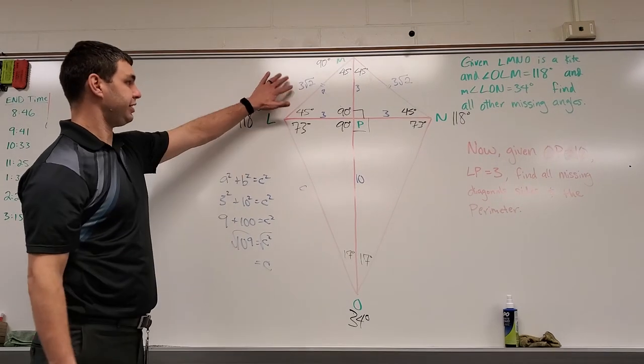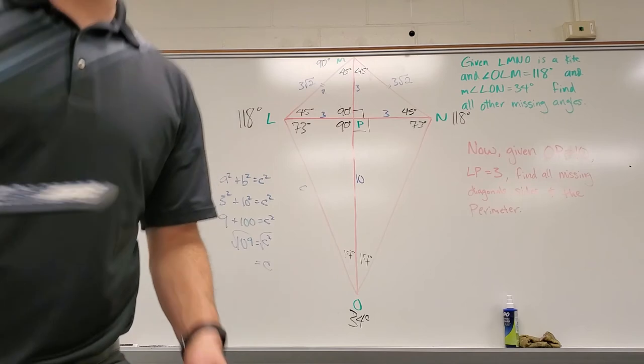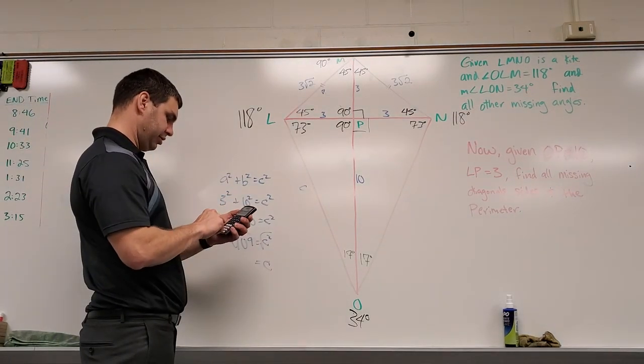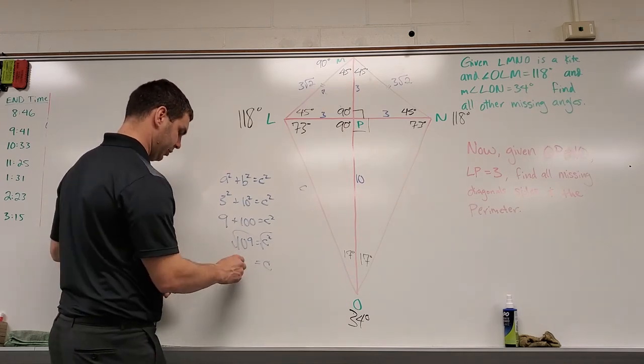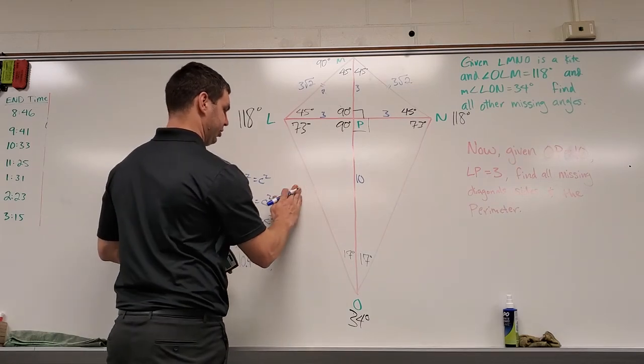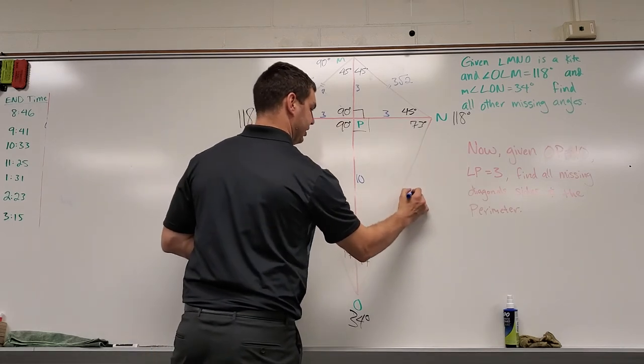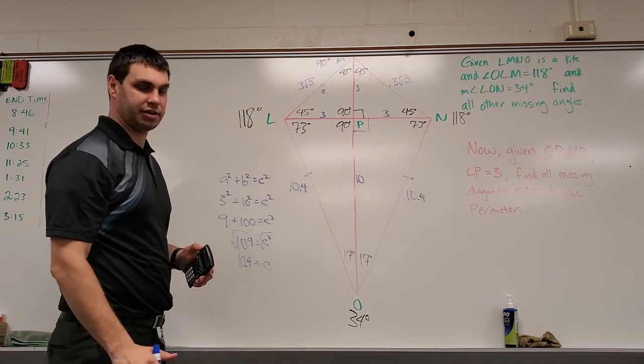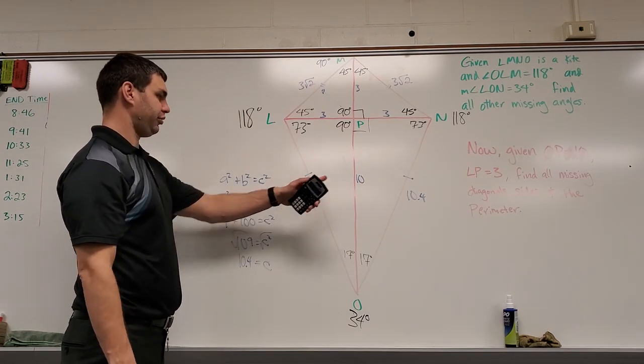Let's maybe get these into decimals so we can get a perimeter. I've got my calculator here, and if I do that, we need the square root of 109, which happens to be 10.4. So 10.4 right here, replace C with 10.4. The other side is also going to be 10.4 since consecutive sides in a kite are congruent.